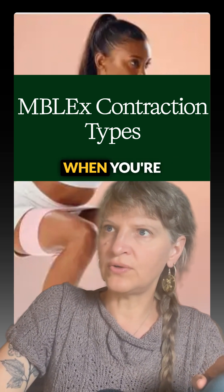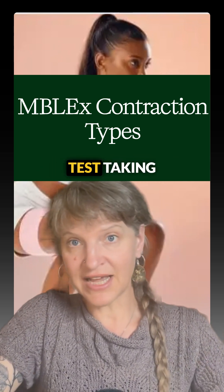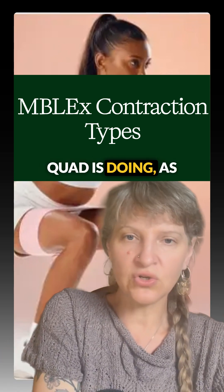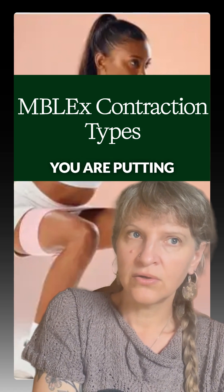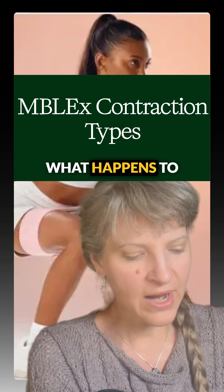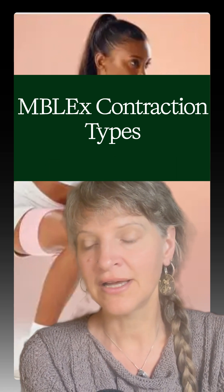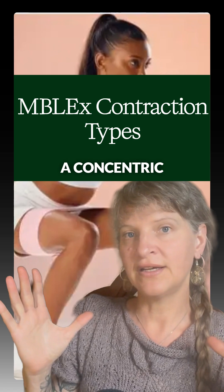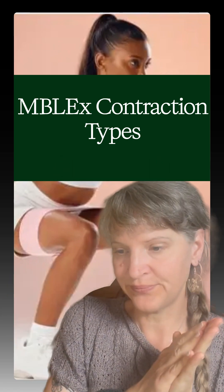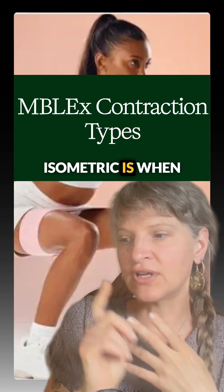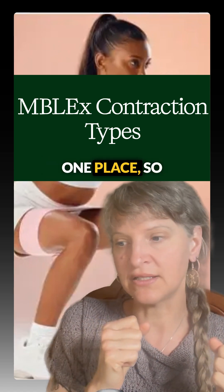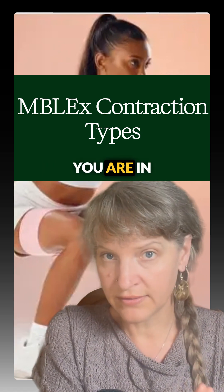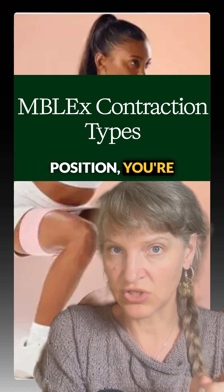So what are your quads doing when you're squatting? You can imagine — if you're in a test-taking situation, you can imagine yourself lowering down. As you put your knee into a flexed position, what happens to the quads is they will get longer. With the quad getting longer, we know that concentric isn't an option because when a concentric contraction happens, the muscle gets shorter. So we know it's not D or B. Isometric is when you are holding the muscle in one place — when you're holding a squat, you're in an isometric position.